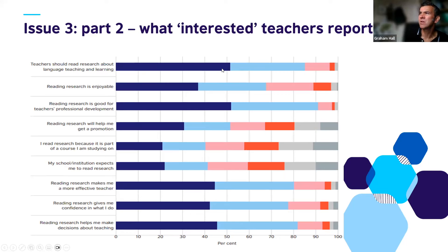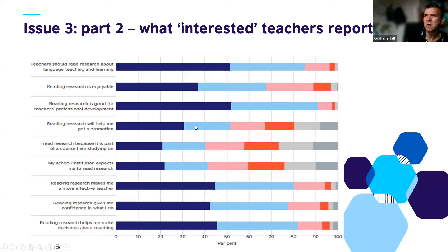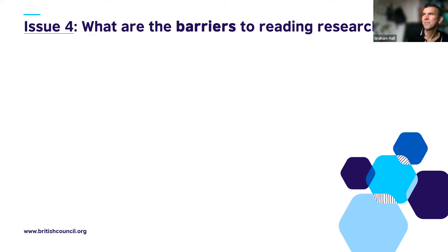From my survey data — blue representing agree/strongly agree, red representing disagree — many research-interested teachers think they should read research, seeing it as part of the job. Many find it enjoyable and good for professional development. There was less emphasis on reading research leading to promotion or being required by institutions. And many agreed that reading research provides confidence.